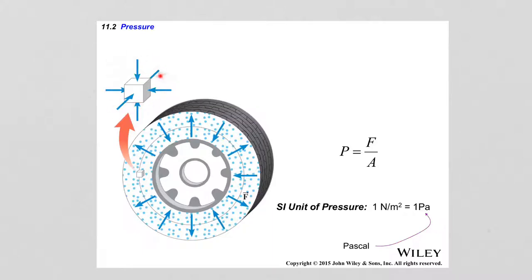A similar statement can be made for an object submerged in liquid, for example water. If the object maintains the same depth in the water, then the pressure that this object will experience will be constant. As long as this object only translates parallel to the surface of the water, the pressure will remain the same. If this object starts to go deeper or come up towards the surface, the pressure will change. The deeper the object goes, the bigger the pressure it will experience.